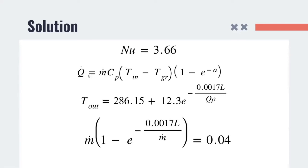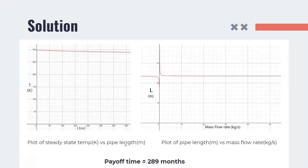Finally, we get the rate of heat transfer as a function of the mass flow rate, the difference of the temperature between the inlet temperature and the ground temperature, and the overall heat transfer coefficient expressed as alpha. Using these, we finally get expressions for the outlet temperature in terms of the length of the pipe and the volumetric flow rate, and the relation between the mass flow rate and the length of the pipe. Plotting the last two equations, we get a plot of the steady state temperature of the pipe versus the pipe length, and a plot of the pipe length versus the mass flow rate.